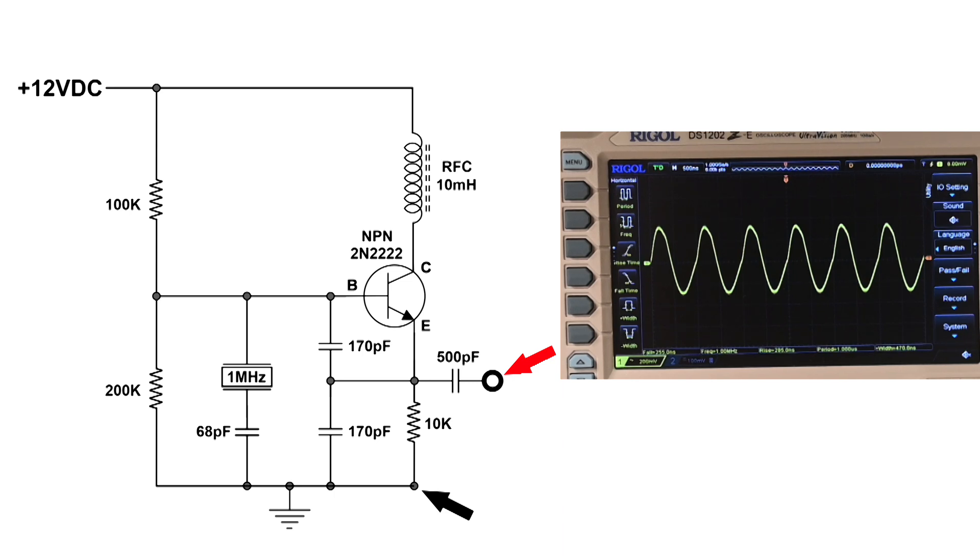And that's because of the EB junction, or the BE junction I should say—either way you say it—the base-emitter. We've got to have an RF path, and that path really influences the base on that transistor.